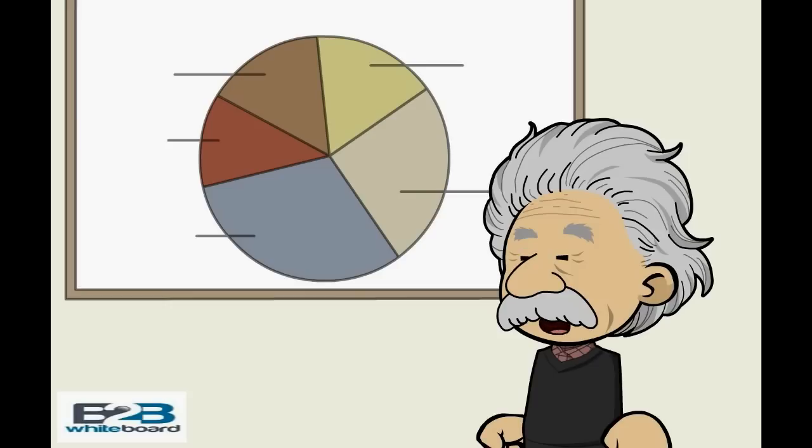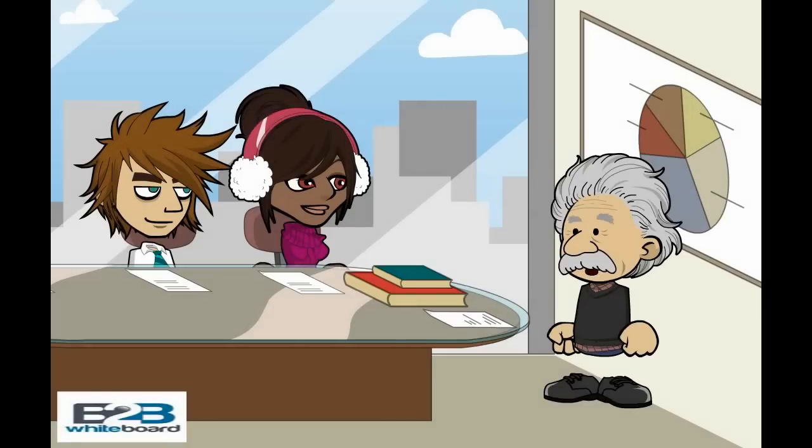One common and incorrect thought process that results from heuristic thinking is the gambler's fallacy. The gambler's fallacy makes the mistake of believing that a random event is affected by previous random events.